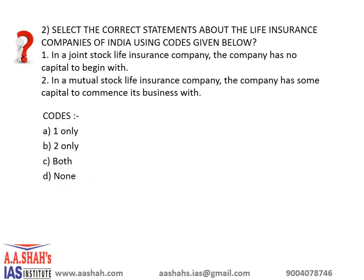The correct answer here is D: none. The joint stock life insurance company has some capital to begin — they have a certain capital base — whereas in the mutual stock life insurance company they do not have any capital to begin with. Also, the Life Insurance Company of India is a mutual stock company, but the benefits of its business go fully to the Government of India, unlike other countries where some profits are shared with the policy holders themselves.